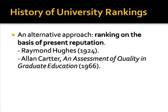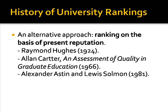Although this technique was initially developed by Raymond Hughes of Miami University in Ohio in 1924, it was not until 1966 when the economist Alan Carter published his more comprehensive study, An Assessment of Quality in Graduate Education, that it became widely influential. Both Hughes and Carter were concerned to assess the opinions of academics about the relative merits of American graduate schools in their particular disciplines, rather than the universities at which these departments formed a part. This approach could also be extended to cover undergraduate programs, however, as in a 1981 study by Astin and Solman, which queried respondents' opinions about both the scholarly excellence of faculty and the institution's commitment to undergraduate teaching in each program.